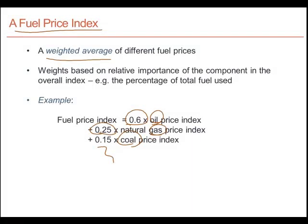The components can move quite differently from the index as a whole, and that is the value of the composite index — it averages over the perhaps different behaviors of its components.